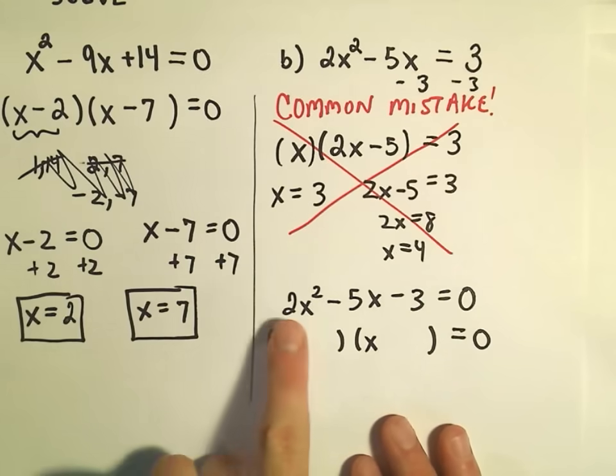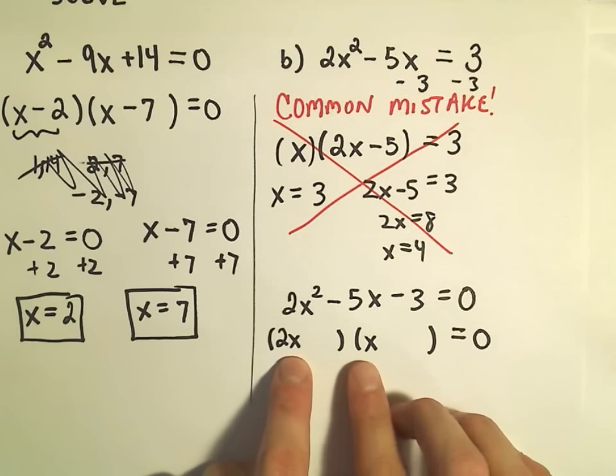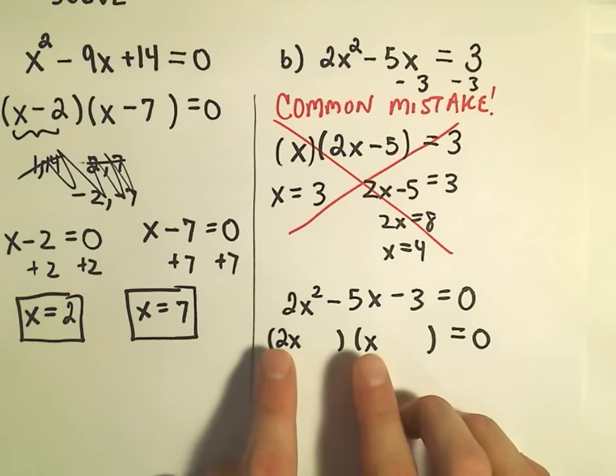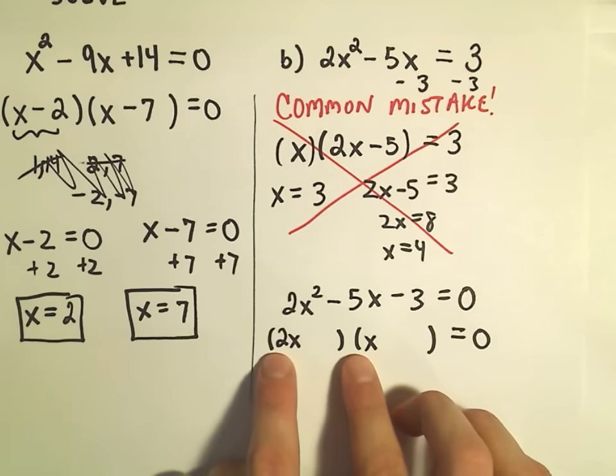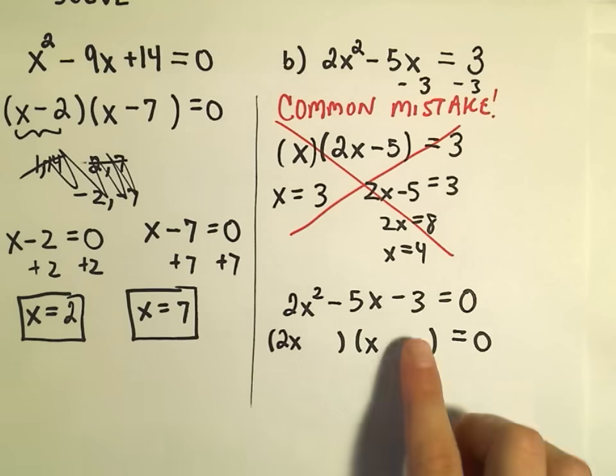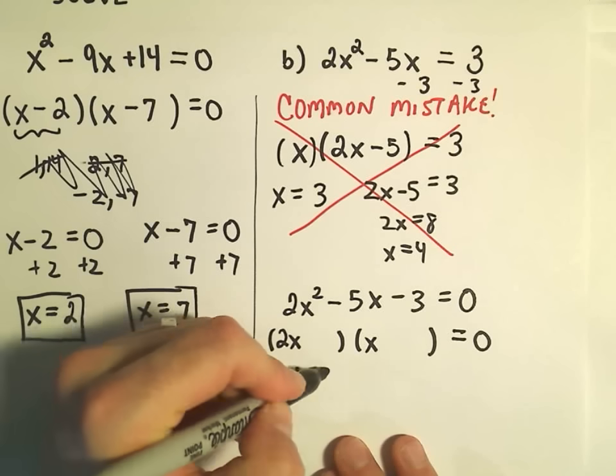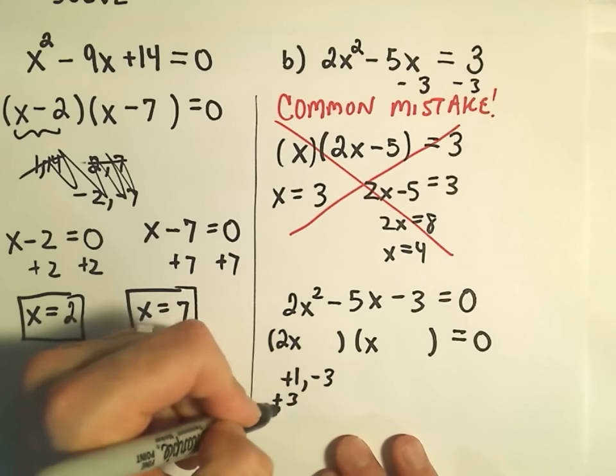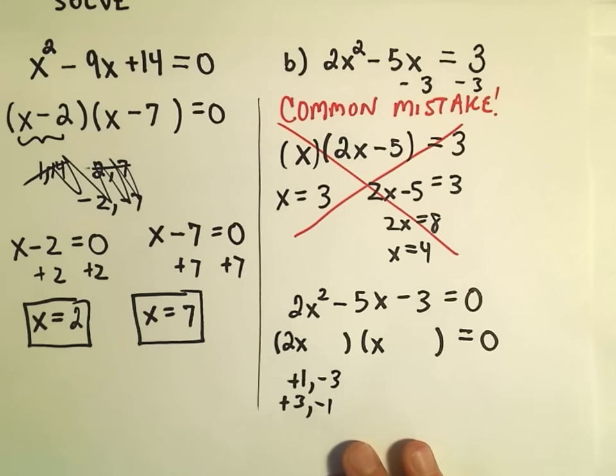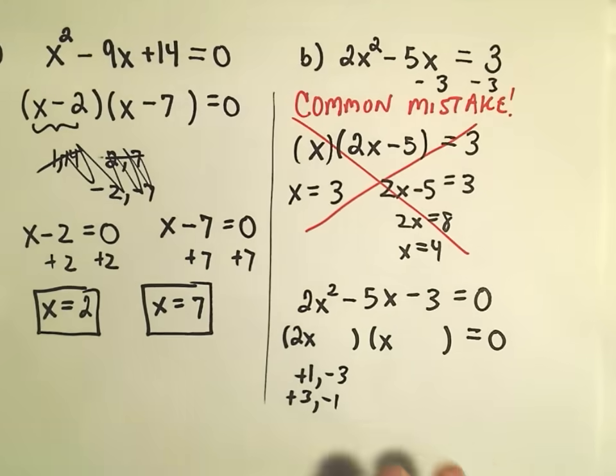To me, the only way to get the 2x squared, at least using whole numbers, I definitely need an x and an x to get x squared. I'm going to have to have a 2 and a 1 to get the 2. To get negative 3, I'm either going to have to use positive 1 and negative 3, or positive 3 and negative 1, if I'm using whole numbers.